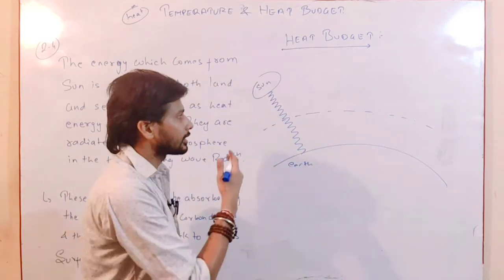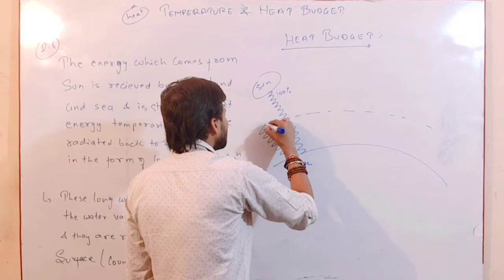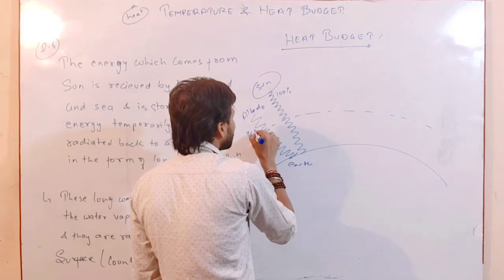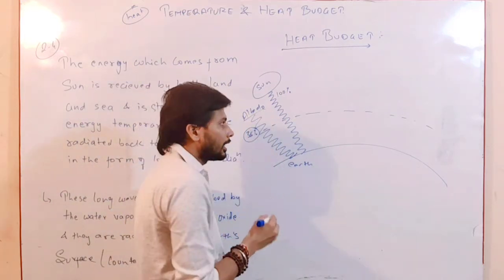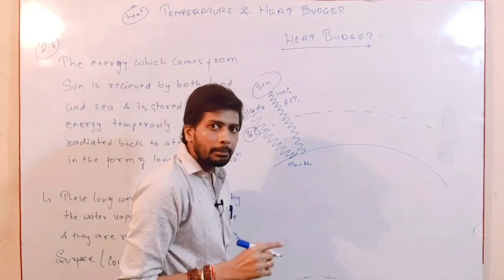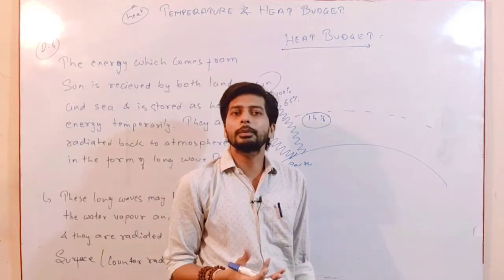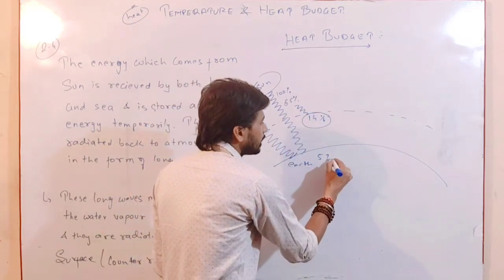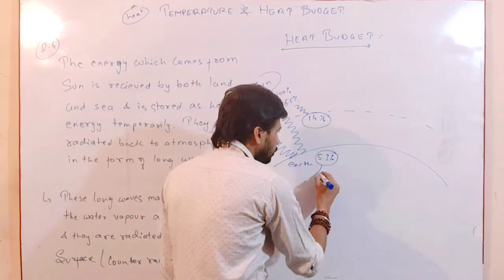Let's say the short wave radiations from the Sun represent 100% energy coming towards the Earth. But we all know some energy is directly reflected back — which we call albedo — and albedo is 35% of the total energy received. So what remains coming toward Earth is 65%. Out of that, 14% is absorbed by the gases and water vapor present in the atmosphere. The remaining 51% comes to the Earth's surface.